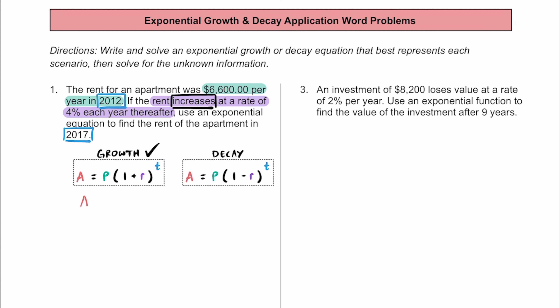Writing this equation: what was the rent in 2017? We don't know. That's going to be equal to P, the initial rent cost, which is $6,600 per year. That's going to be multiplied by 1 plus whatever the rate is. The rate is 4%, so we convert it to a decimal: 0.04. For T, that represents how many years have gone by — from 2012 to 2017, that's a span of 5 years, so T equals 5.